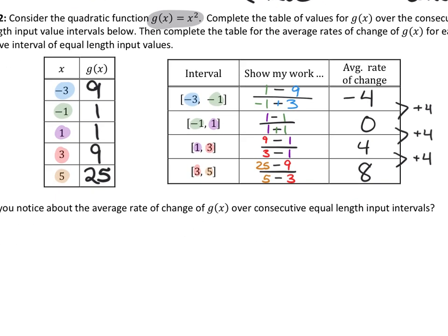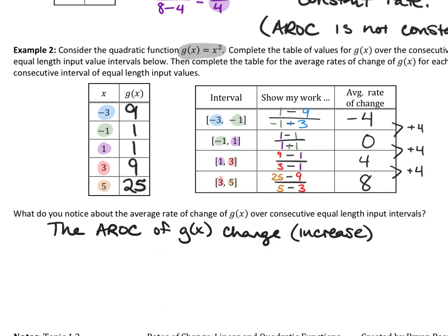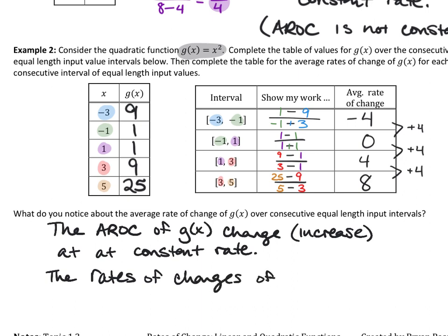When my rates of change are changing at a constant rate, that's a quadratic. That's the definition of a rate of change for a quadratic. So what do we notice about the average rates of change of this function over equal-length intervals? We notice that the average rate of change of g(x) changes — specifically increases — at a constant rate. Therefore, the rates of change of g(x) are given by a linear function.